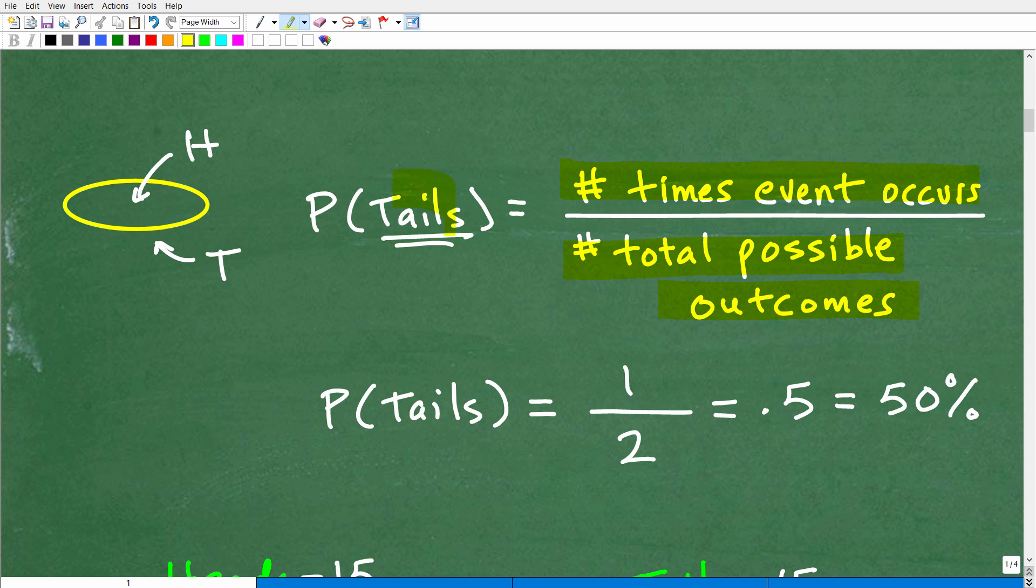Well, that's going to be equal to the number of times this event can occur over the total possible outcomes of events. Well, what does that mean? Well, how many ways can this coin come up tails? There's only one way this coin can come up tails, and that is if it lands and we see the tails.